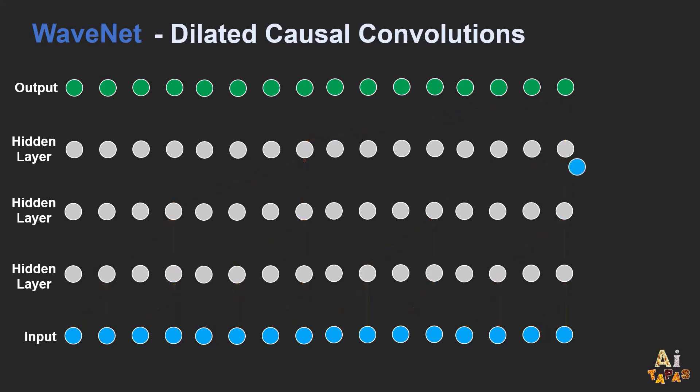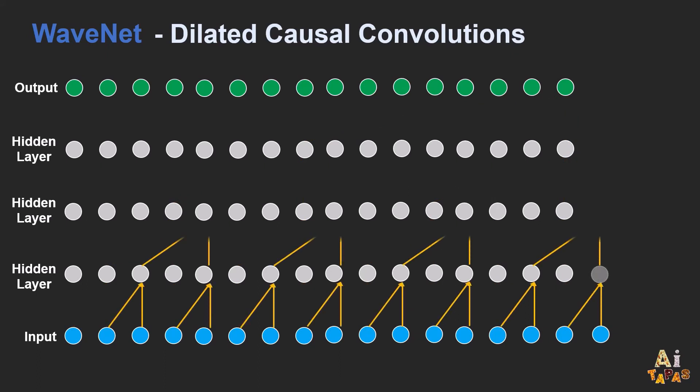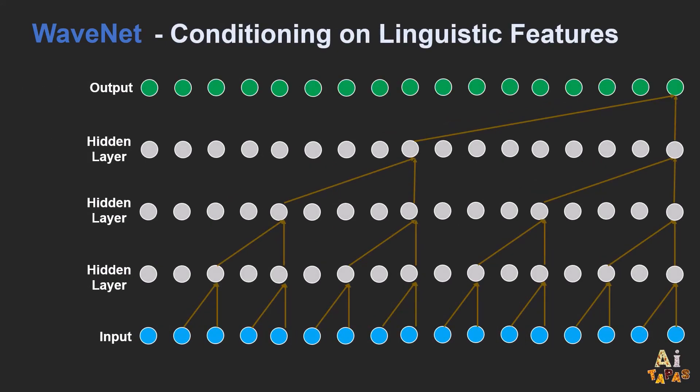When generating with the model, the predictions are sequential. After each sample is predicted, it is fed back into the network to predict the next sample. During model training, the linguistic features embedding are also fed to each of the layers, so that the model can learn how to produce speech from text. These embeddings are essentially numerical representations of linguistic features, such as phonemes, that were mentioned earlier.